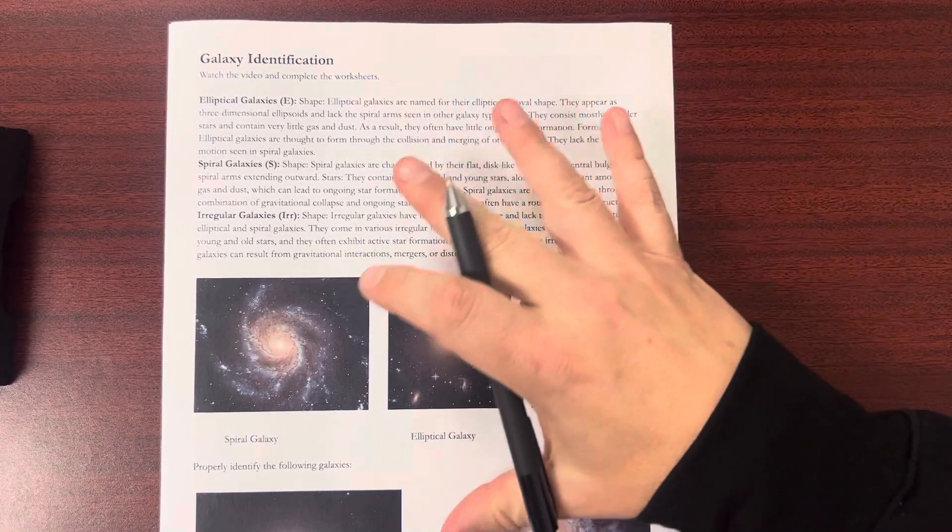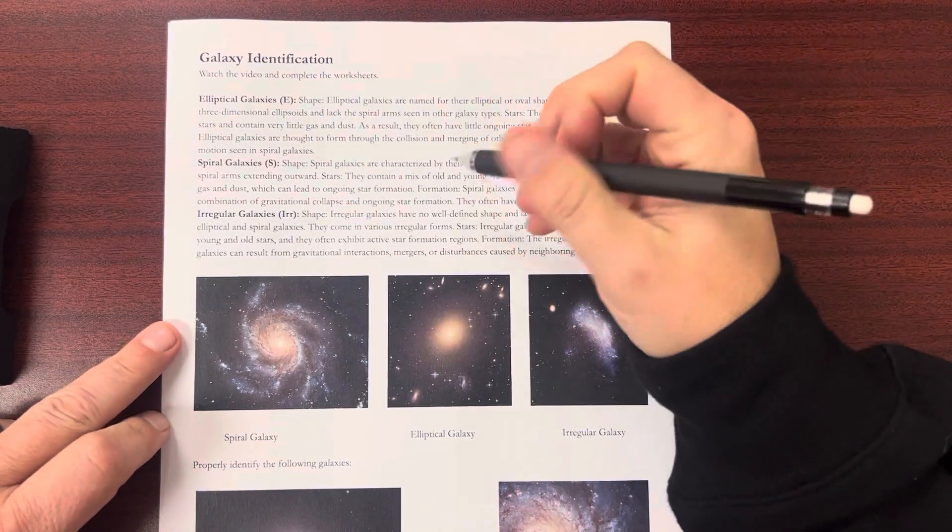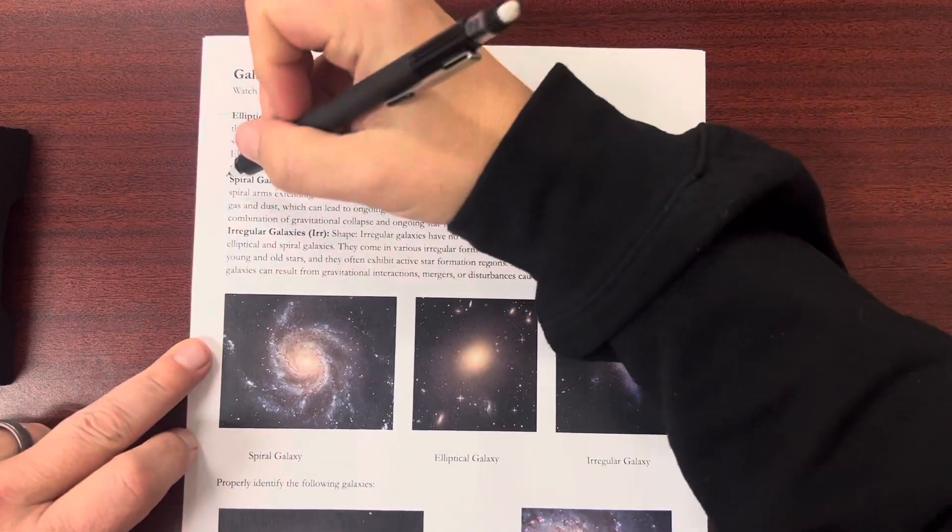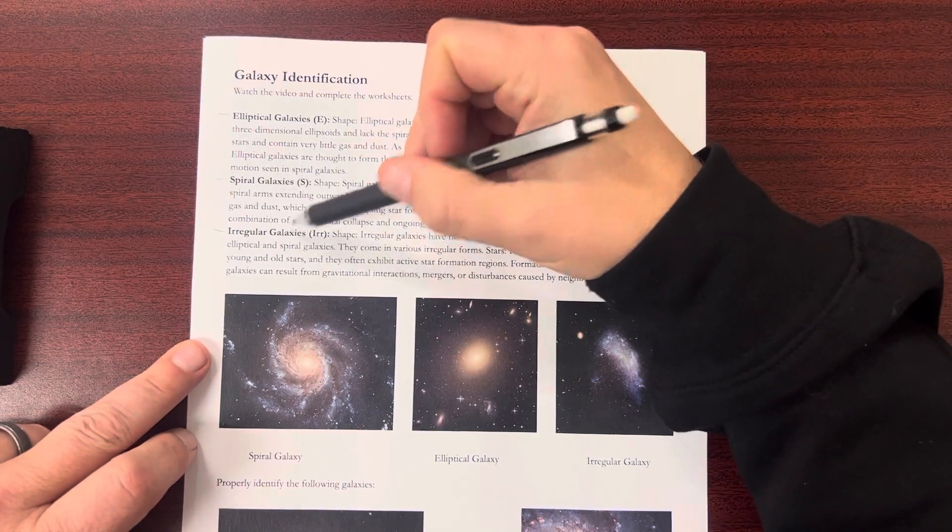Hello, just a very quick introduction to this galaxy identification. So we've got three types of galaxies here: elliptical, spiral, and irregular.